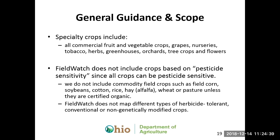More specifically, this registry is for specialty crop producers — pretty much anything other than grain commodities. Fruits and vegetables such as grapes, nurseries, hops, greenhouses, orchards, nut trees, tree farms are all included. These are all high-value, high-risk crops. We do have an exception for organic crops: if you're growing organic soybean, you are eligible to be on the map. So organic grains will be on the map, but conventional dicamba-tolerant beans will not.